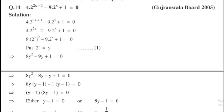Put y = 2^x. Then we get 8y² - 9y + 1 = 0.